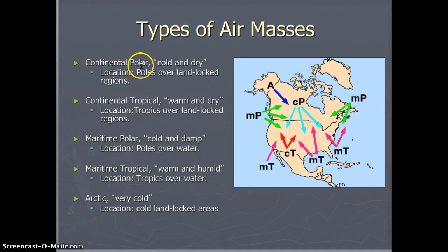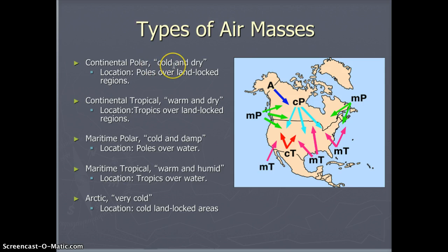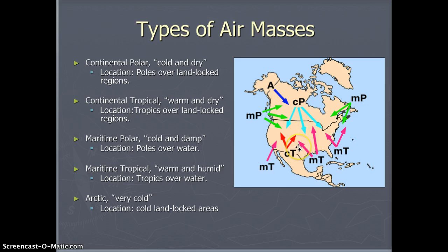A continental polar is just that — it's from the continent and it is polar. So it's cold and polar, and since it's over land, it's dry. A continental polar comes from Canada. We call these Canadian clippers because they start in Canada and bring cold air straight down the Great Plains to Texas.